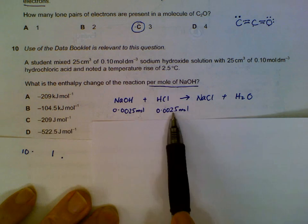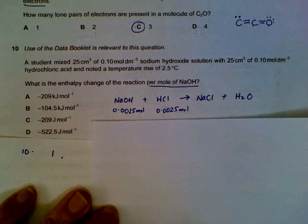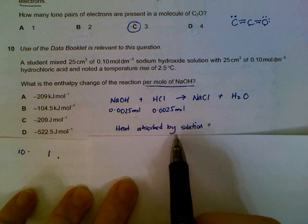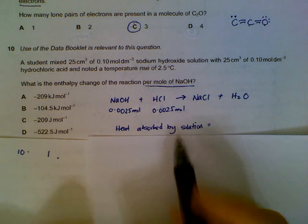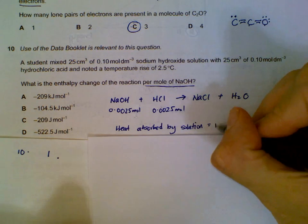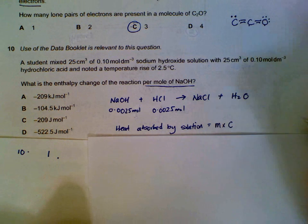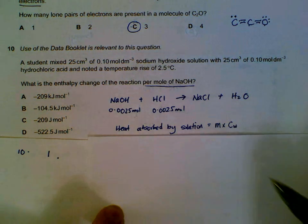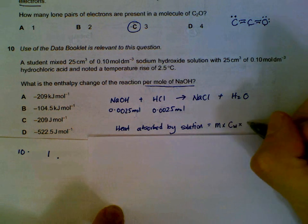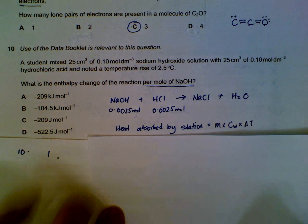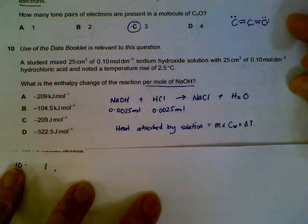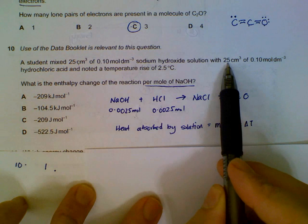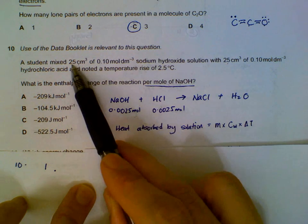It's the same number of moles for hydrochloric acid. Next, figure out the heat produced during the reaction. The solution experiences an increase in temperature of 2.5 degrees, so heat absorbed by the solution equals mass of the solution multiplied by specific heat capacity. The total volume is actually 25 plus 25, so the total volume is 50.